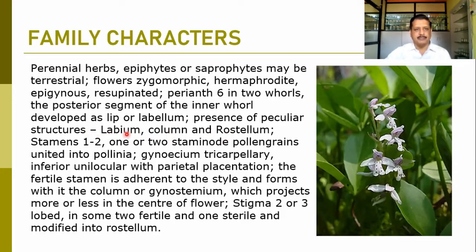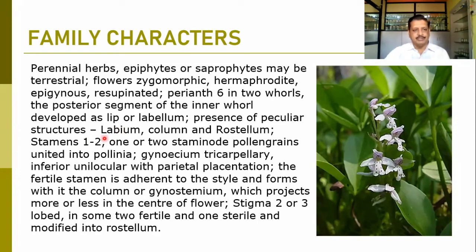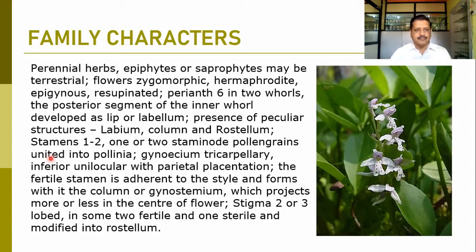The labellum, column, and rostellum are the peculiar structures of the flower in this family. Stamens are 1 to 2, with 1 or 2 staminodes. Pollen grains are united into a group known as the pollinia.